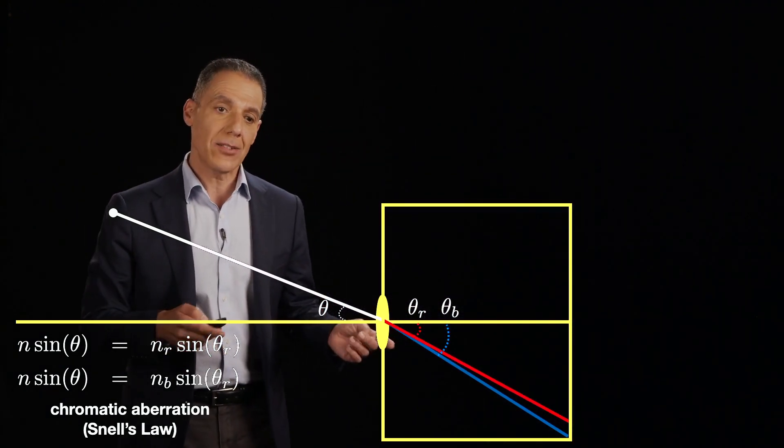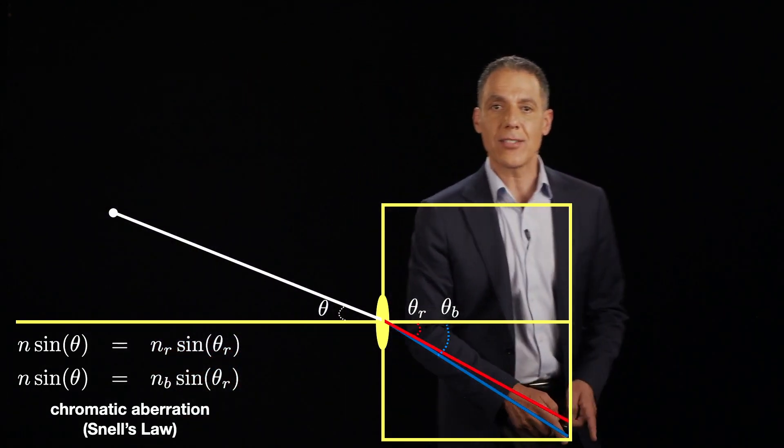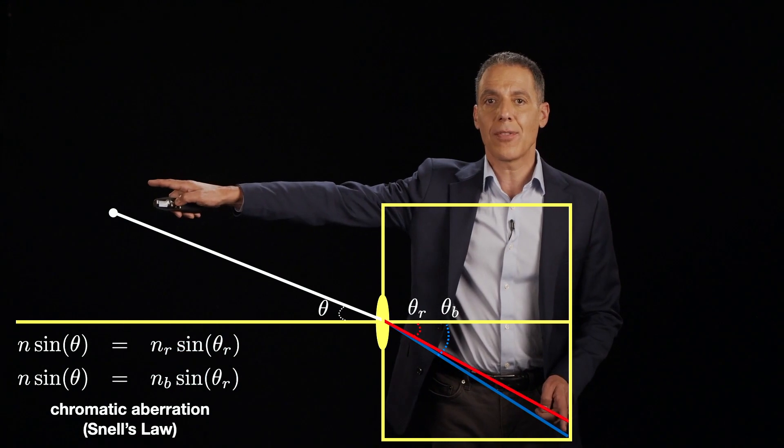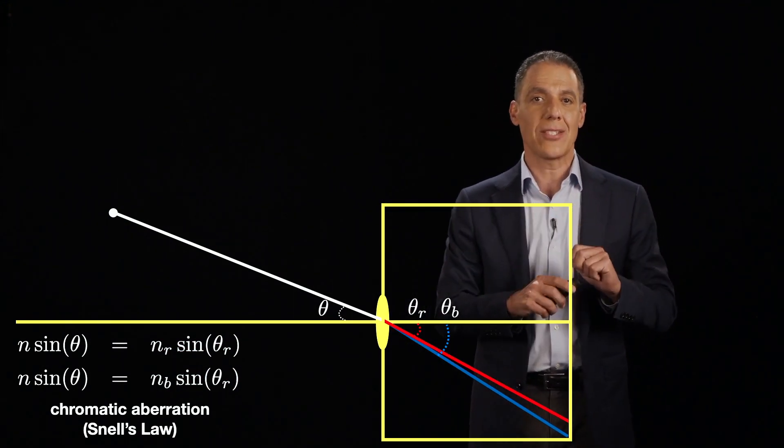And what that means is, for example, down here at the corner of the sensor, that point out there is going to image in the red channel and the blue channel into slightly different places.